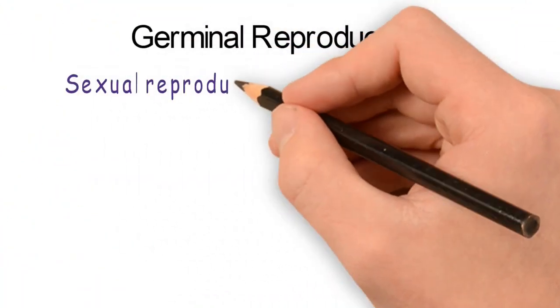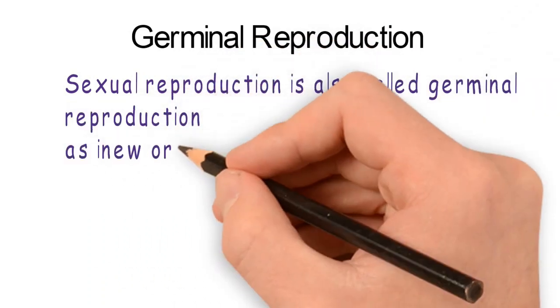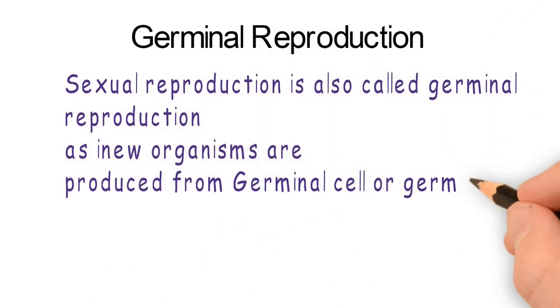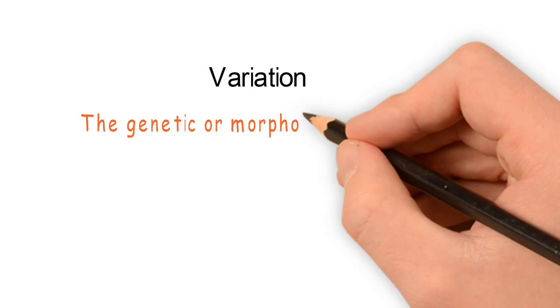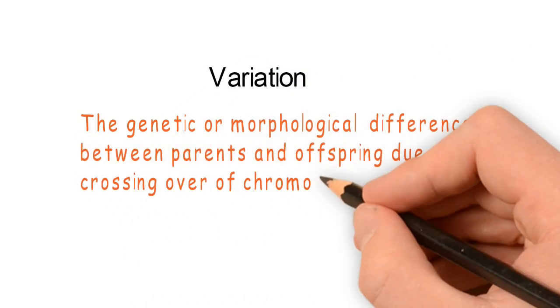Germinal reproduction - sexual reproduction is also called germinal reproduction as new organisms are produced from germinal cells or germ cells. Then variation - the genetic or morphological differences between parents and offspring due to crossing over of chromosomes is called variation.